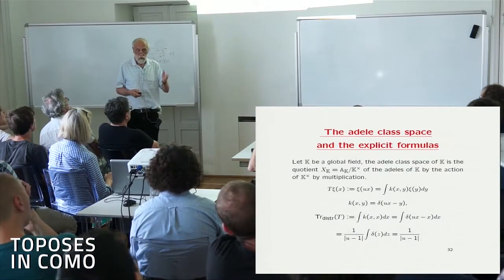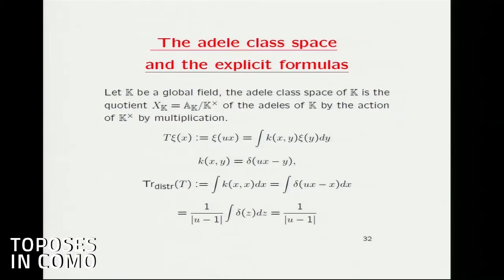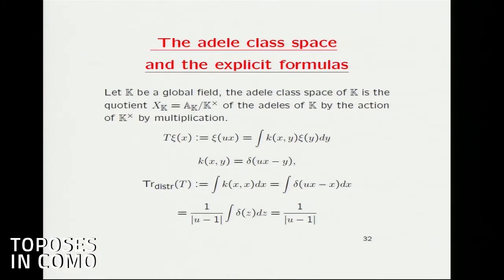I learned afterwards from Peter Sarnak that Paul Cohen had been trying with the same space. The reason why it is a very hard thing to do is that it is a general fact that the action of the multiplicative group of a global field on the Adeles is actually ergodic. But you can immediately understand how the local terms of André Weil appear: they appear because if you look at the action by scaling of a local field on itself by multiplication, it is given by a Schwartz kernel — the Dirac distribution of ux minus y. When you compute formally the distributional trace, namely taking x equals y, you get the integral of δ(ux − x), and changing variables you find 1/(u−1). You see the modulus appearing — everything appears fine.